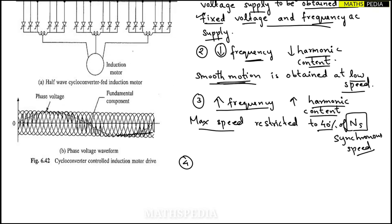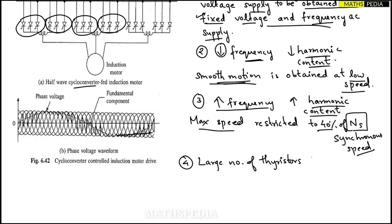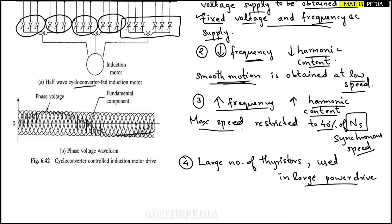As you can see in the diagram, many thyristors are used in this half-wave cycloconverter for the induction motor drive. Because a large number of thyristors are used, this drive can be used in large power drives.